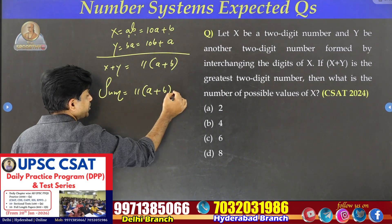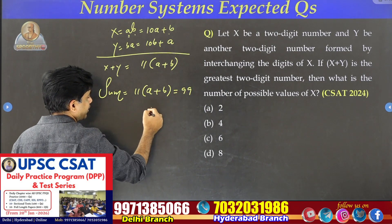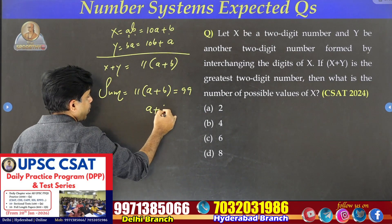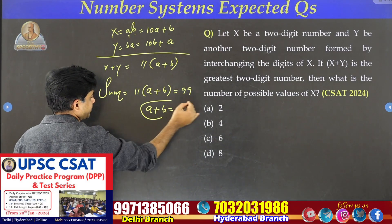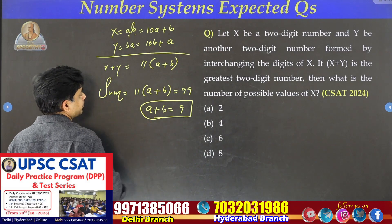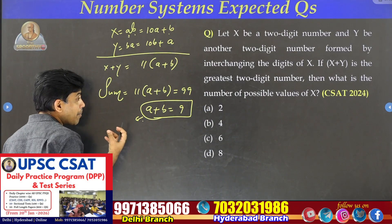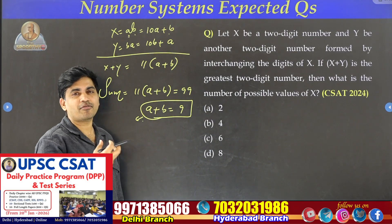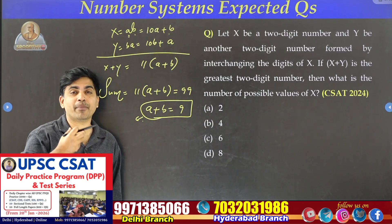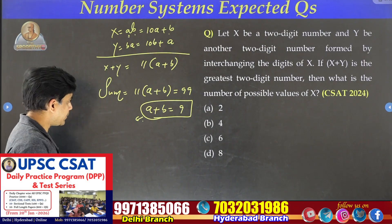Sum equals 11 into (a plus b), which is equal to 99. So what is a plus b? It is 9. The meaning of a plus b equals 9 is that the sum of digits of that number equals 9.